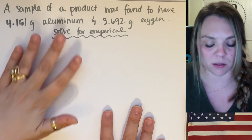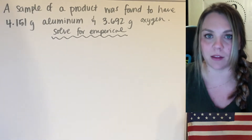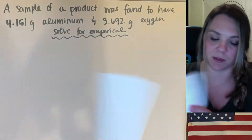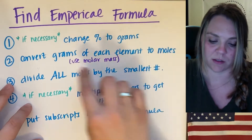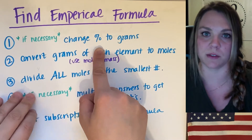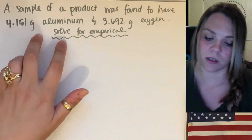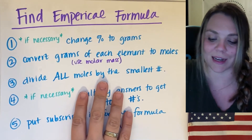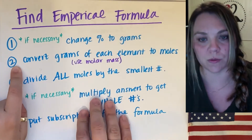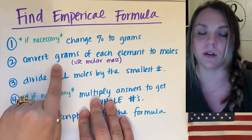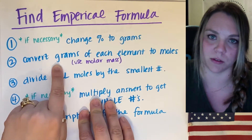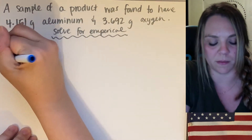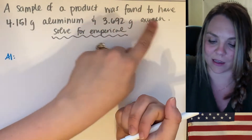Just like any other empirical formula problem, use the five steps. Step one: if necessary, change percent to grams. This question gives me everything in grams already, so that step is not necessary. Step two: convert grams of each element into moles using your molar mass. I'm going to do this for both aluminum and oxygen.